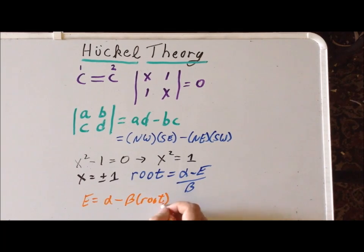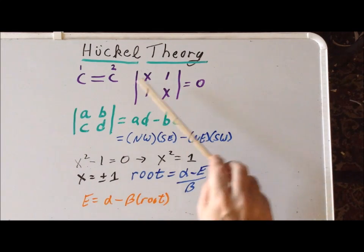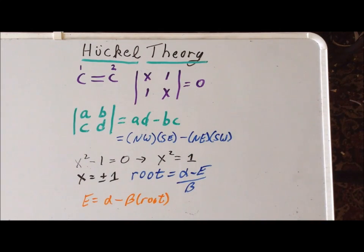This will be useful because we're going to use this exact same substitution in every case of Hückel theory. It's much easier to write X than alpha minus the energy divided by beta. Once we solve for the roots from the secular determinant, we can write down the energies merely by using the roots.